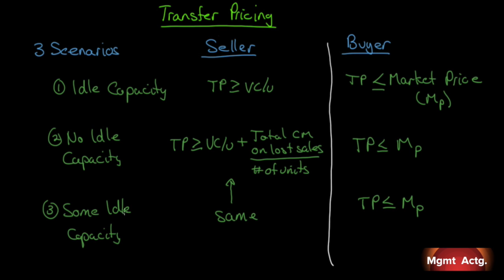Scenario three: there is some idle capacity. The transfer price must again be greater than the variable cost per unit, plus compensation for the lost contribution margin on units redirected from outside. However, since there is some idle capacity, not all units are being given up. The lost contribution margin on the few units sacrificed can be spread across all the units being transferred, so the denominator will not equal the numerator. Once we look at a numerical example, this will come through nice and clear — it's fairly straightforward in practice.